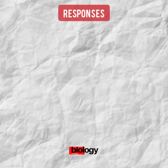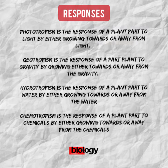Phototropism is the response of a plant to light by either growing towards or away from the light. Growth towards the light is called positive phototropism, while growth away from the light is called negative phototropism. Positive phototropism in plants ensures that the leaves are exposed to sunlight in order for photosynthesis to take place. Geotropism is the response of a plant part to gravity by either growing towards or away from gravity. Growth towards gravity is called positive geotropism; growth away from gravity is called negative geotropism.